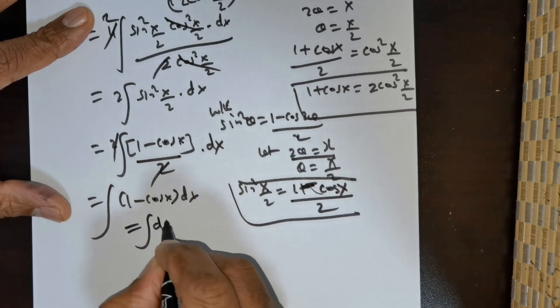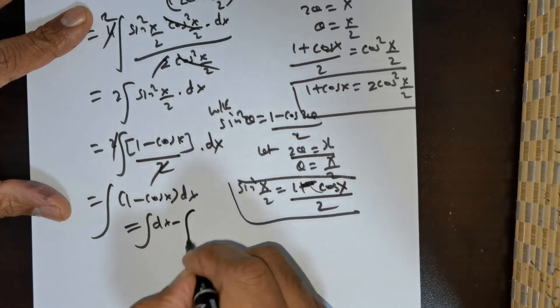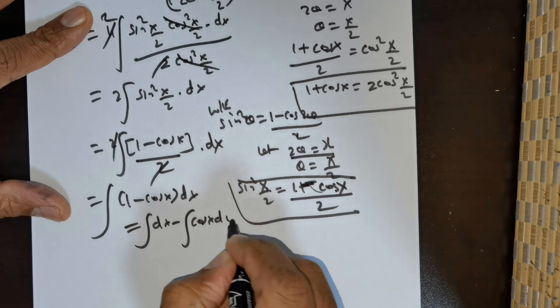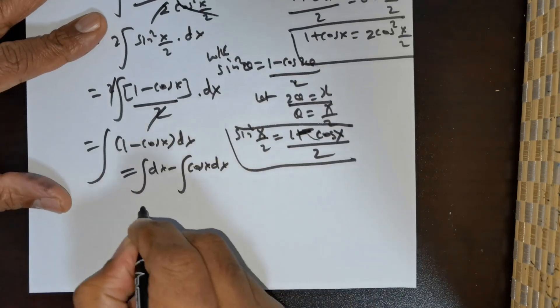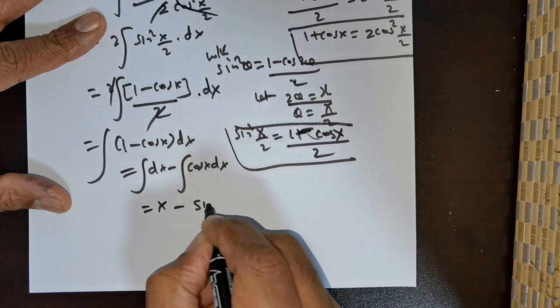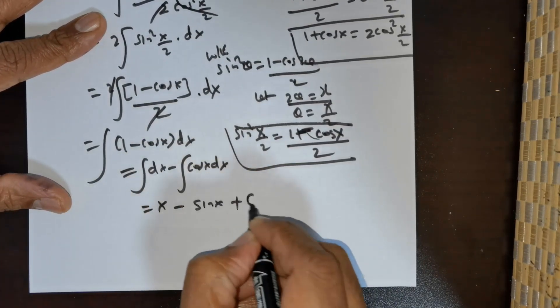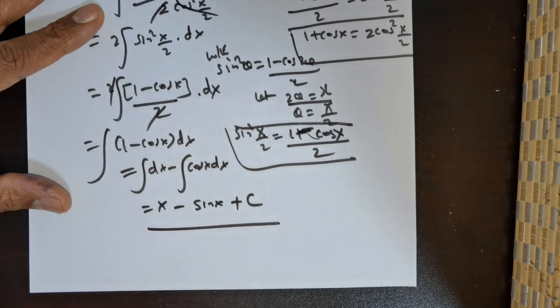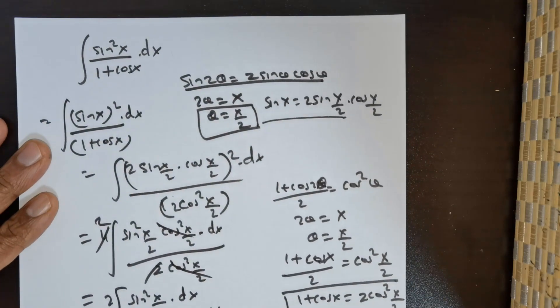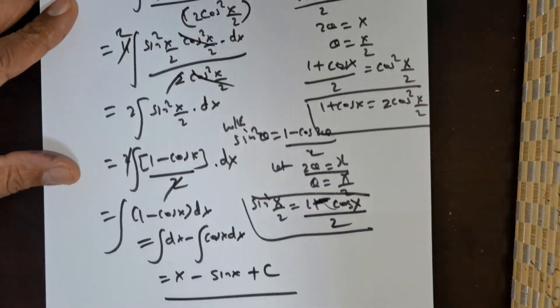This can be rewritten as ∫ dx − ∫ cos(x) dx. Integrating dx gives x, and integrating cos(x) gives sin(x). So the final answer is x − sin(x) + C. And that is the solution for this beautiful question.